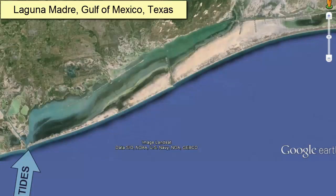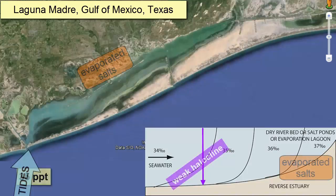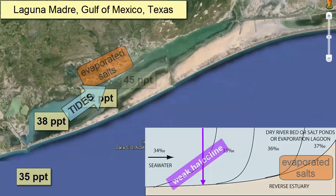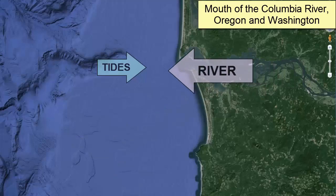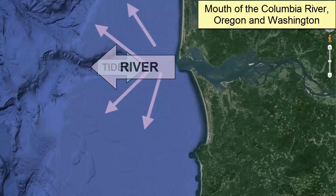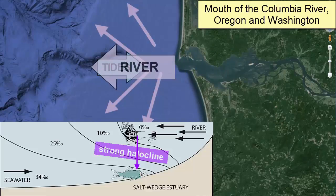This image of Laguna Madre, behind barrier islands in the Gulf of Mexico, shows another reverse estuary. Evaporation rates in this lagoon are so high that seawater gets progressively saltier as it moves in and mixes with the lagoon waters. This image of the mouth of the Columbia River — a high-volume river — demonstrates a salt wedge estuary. Imagine being in a boat in these waters, not even able to see land, but having fresh water at the surface while below you the seafloor has saltwater fish.